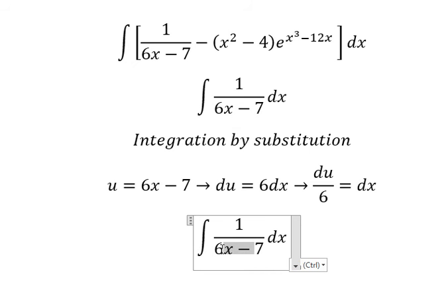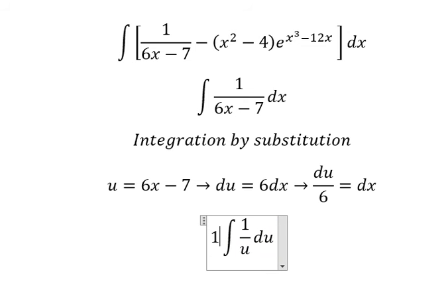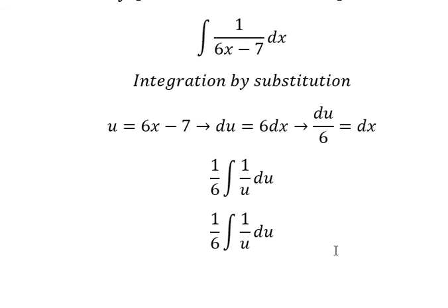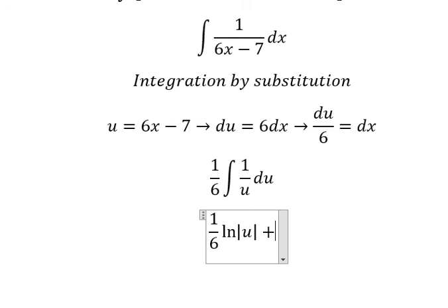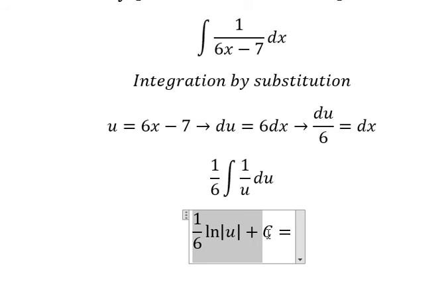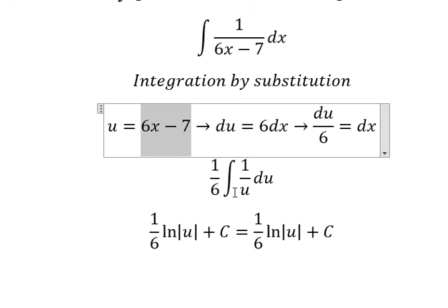We divide both sides by 6. Then we change the expression by u, and we change dx by this expression. The integral of this gives us ln of the absolute value of u, plus C. Substituting back, u is equal to 6x minus 7.